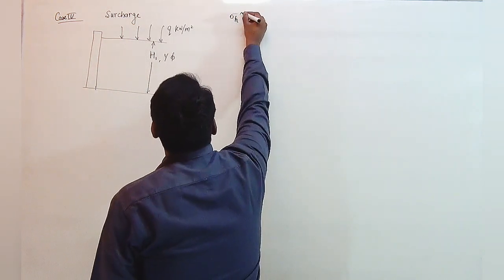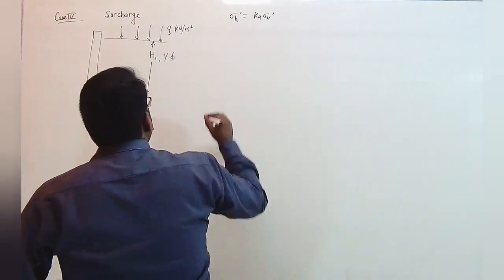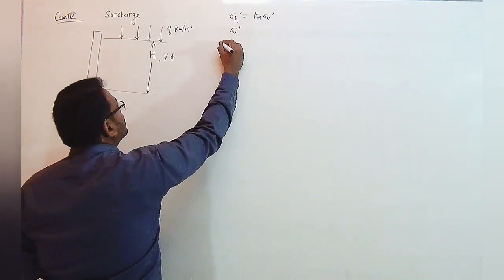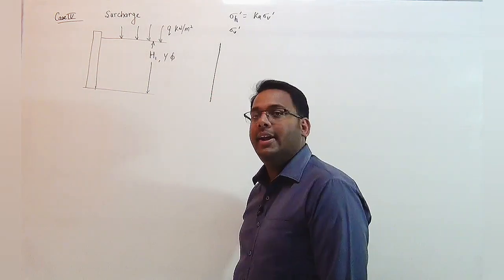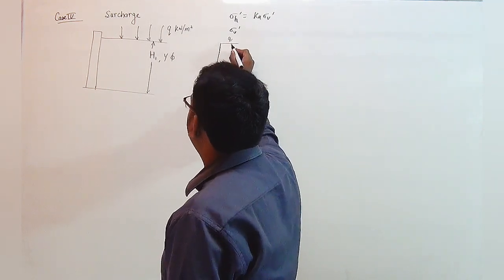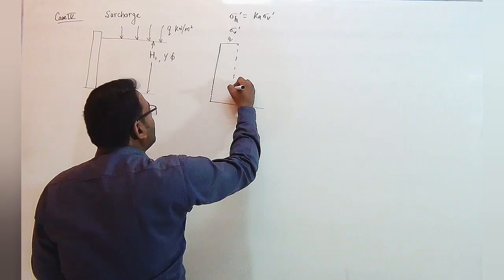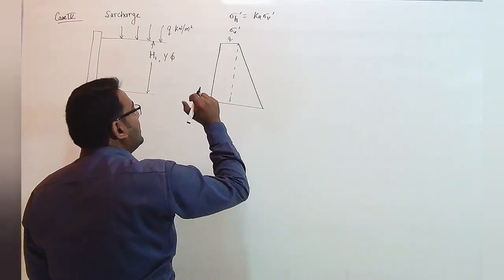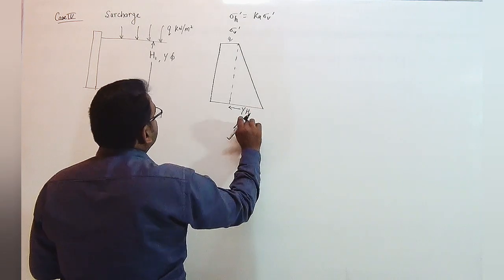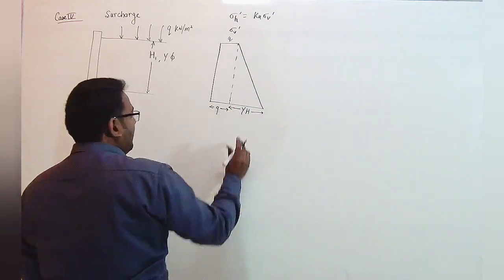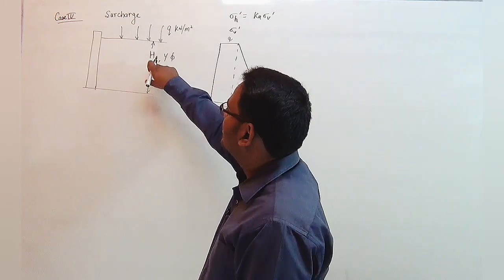We already know that σh' = Ka · σv' for the active case, and we can easily plot the diagram for the vertical stress. As there is no water table, the whole surcharge is carried by the solids only, and hence the effective vertical stress equals q at the top level. As we move downward, q remains constant but the effective stress increases due to the self-weight of the soil. At depth H, the effective stress becomes gamma · H, so the total effective vertical stress equals q plus gamma · H.